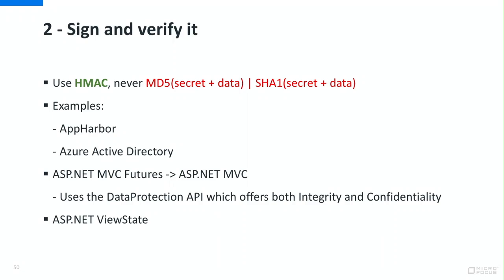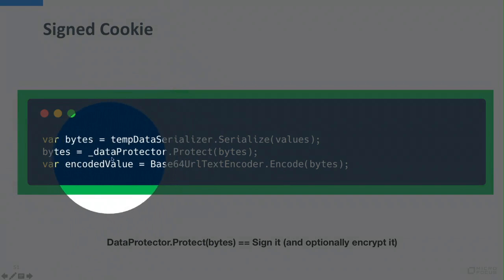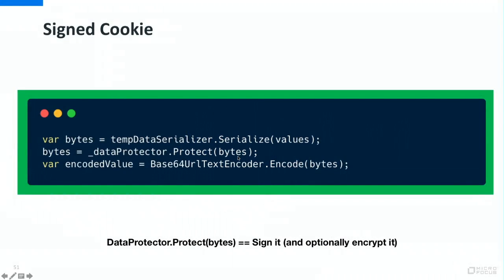This is the way AppHarbor and Azure actually fixed their issues — just signing data they were not expecting anyone to change and then verifying it hadn't been modified. Same thing with ASP.NET: back in 2013 they removed the cookie temp-data provider and replaced it with the Data Protector API, doing something very similar — protecting the bytes — which basically signs and encrypts the data using WebConfig validation and encryption keys, so the data can't be tampered with without the server noticing.